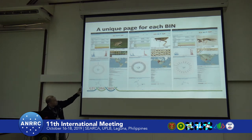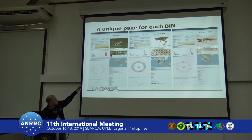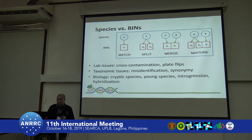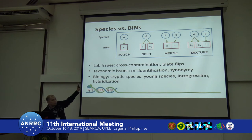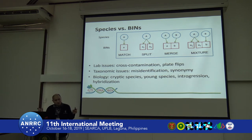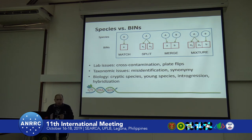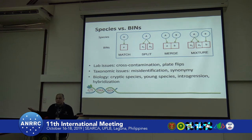Here are examples of BIN webpages — each represents a BIN and includes individuals which can be ascribed to that particular number. When you compare BINs to species identification, sometimes there is a match and a species can be ascribed to a particular BIN. But other times, a species actually splits into two different BINs — raising the possibility of cryptic species. There are also instances where two distinct species merge into just one BIN, possibly indicating wrong taxonomy where two independently identified species are in fact the same species.